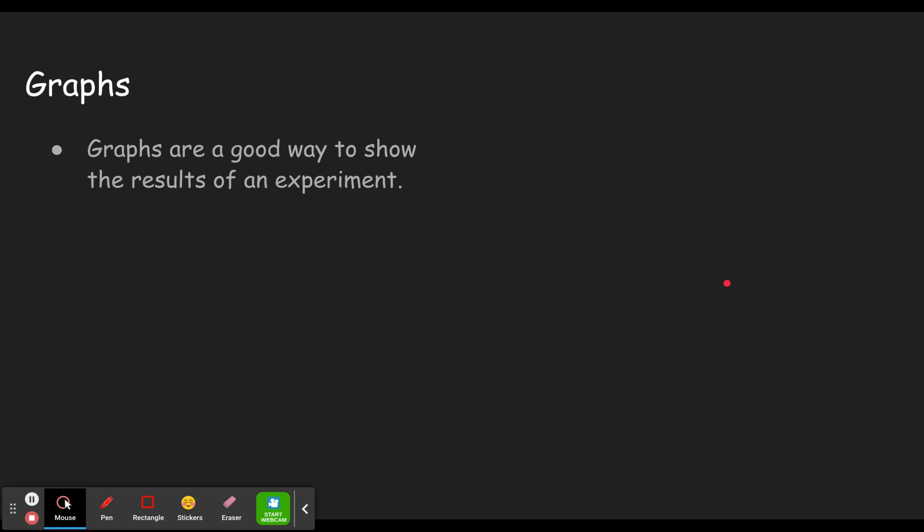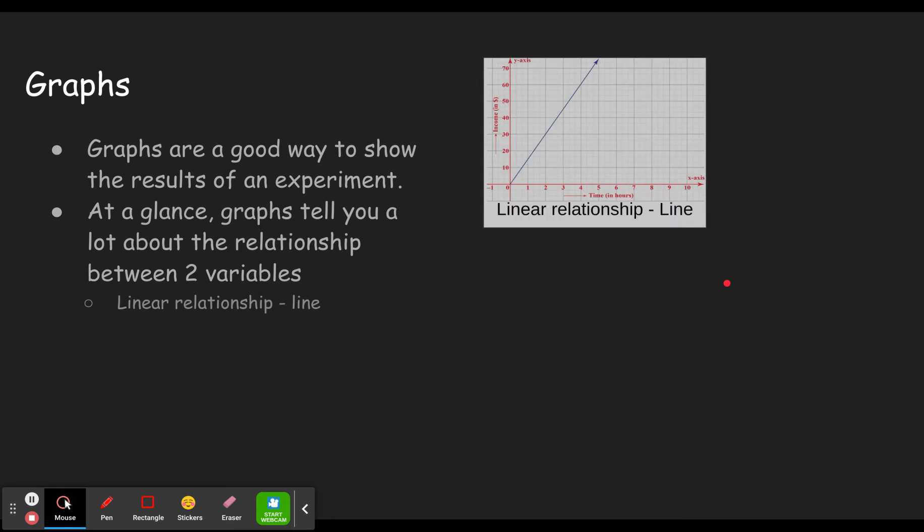Something that we aren't really covering here and haven't really covered already, but I wanted to introduce it, is that each of the types of relationships that we saw in the last video would be described by a different kind of graph. The graph at a glance tells you a lot about the relationship between the two variables. So if you do an experiment and you come out with a graph that's a line, that means you had a linear relationship between those two variables.